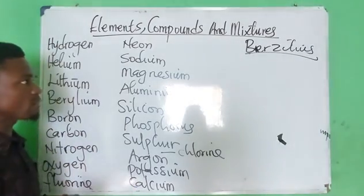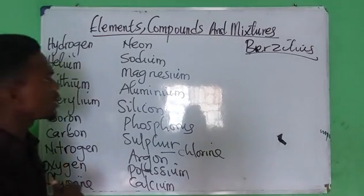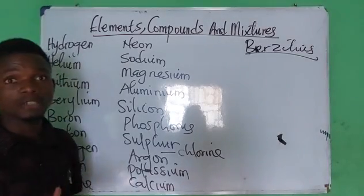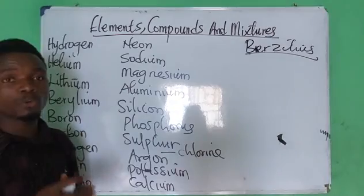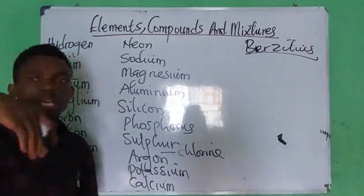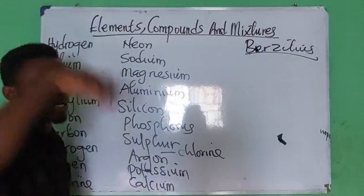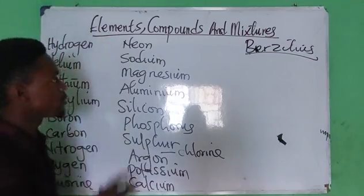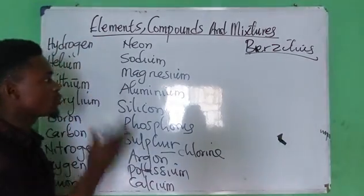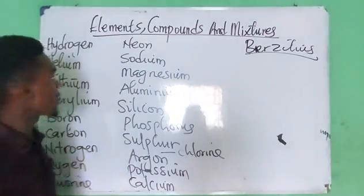Of course, you have elements 21 to 30 like scandium, titanium, vanadium, chromium, manganese, nickel, and so on — those are from 21 and above. But today's class, we are focused on just the first 20 elements.